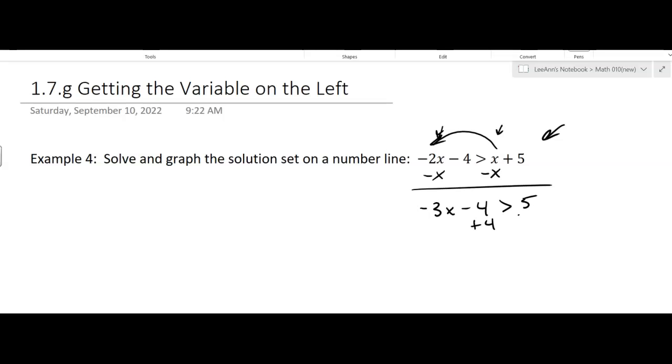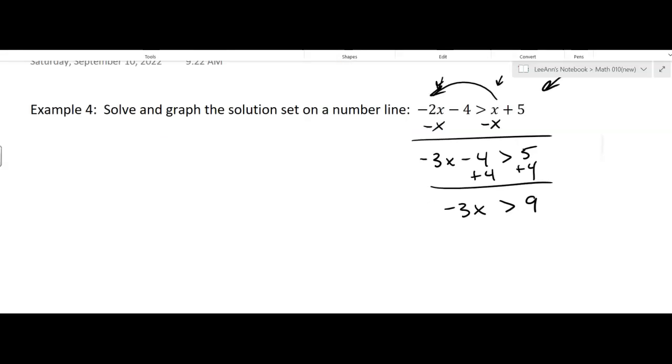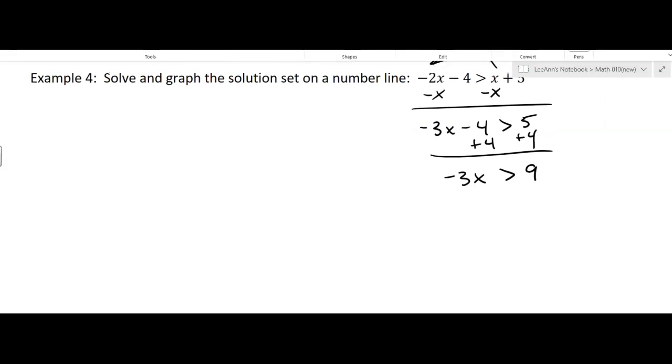And I'm going to add 4 to both sides. I have negative 3x is greater than 9. OK, then the bad news is sometimes you have to divide by a negative number. But that doesn't scare me. I'm going to remember x is less than negative 3.